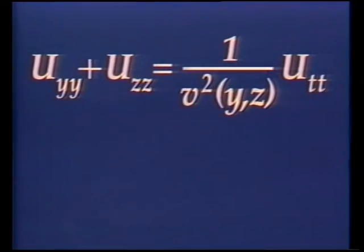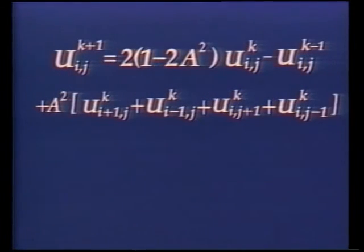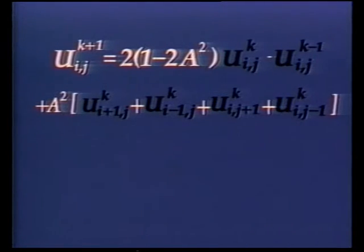A common way of discretizing this equation is with a second order finite difference lattice, which calculates the values of wave energy at individual points in the medium. The values at individual points are dependent upon the value at the previous time steps and the values at neighboring points.